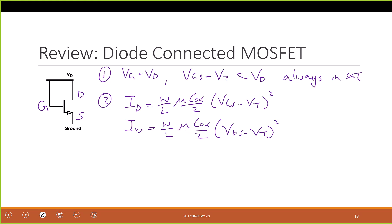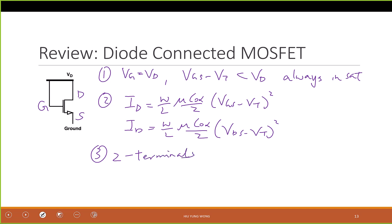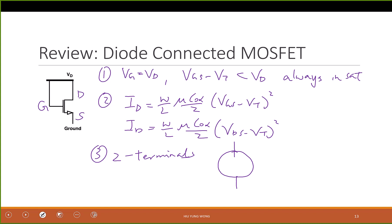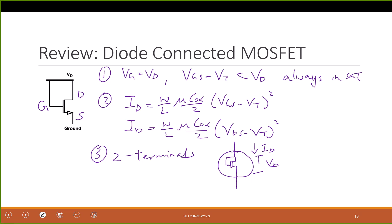How many terminals does this device have now effectively? Only two terminals — very good. Because I can just see the whole thing as this. This is Id and this is Vd. It's just a two-terminal device.